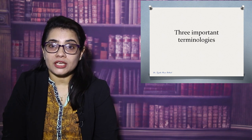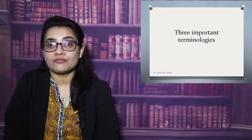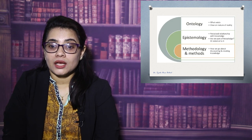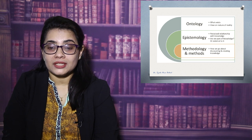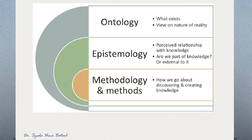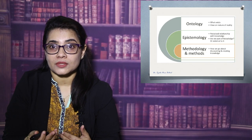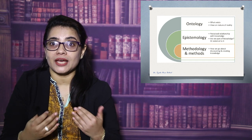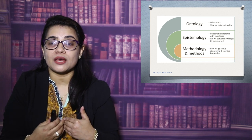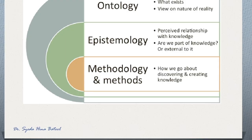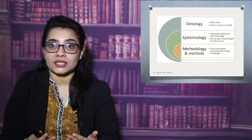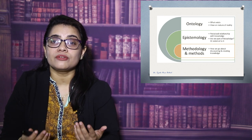Before understanding what a paradigm is or what the three paradigms belong to, it is very important to learn three important terminologies related to research philosophy. The first one is ontology — ontology means what exists. The second is epistemology, which is basically the relationship between a researcher and reality. The third concept is methodology or methods — that means how we go about discovering and creating knowledge, or which methods we adopt to find out the reality.